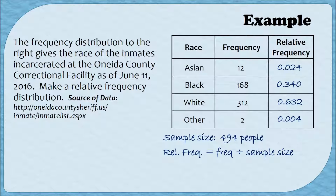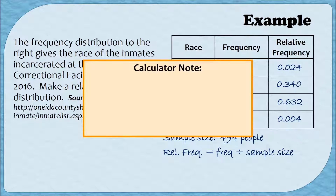Depending on the calculator you have and its settings, you may or may not have gotten 0.004 for that last relative frequency. If your calculator displays an answer like 4 times 10 to the minus 3, or 4e to the minus 3, your calculator is giving you an answer in scientific notation. Your calculator will default to scientific notation if your answer is particularly small or particularly large, and different calculators define large and small differently. Here's how to convert from scientific notation into standard decimal form.